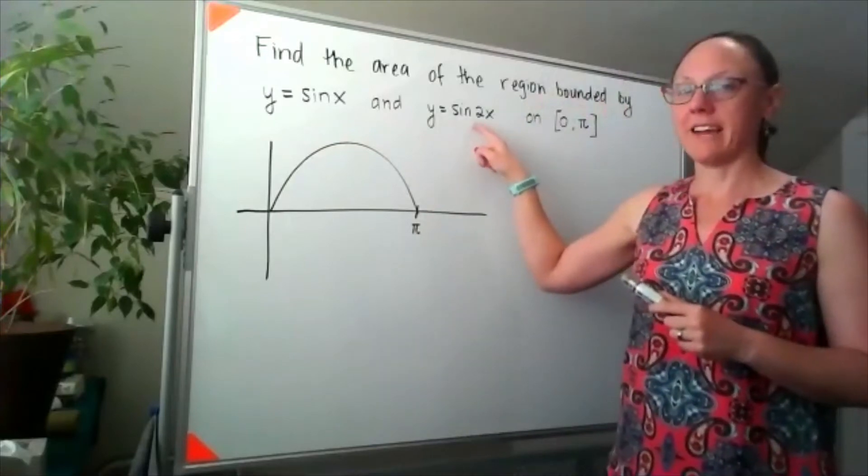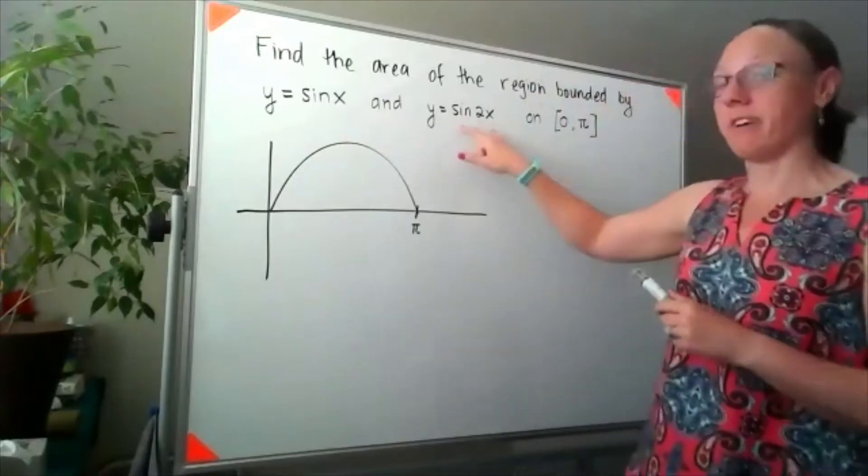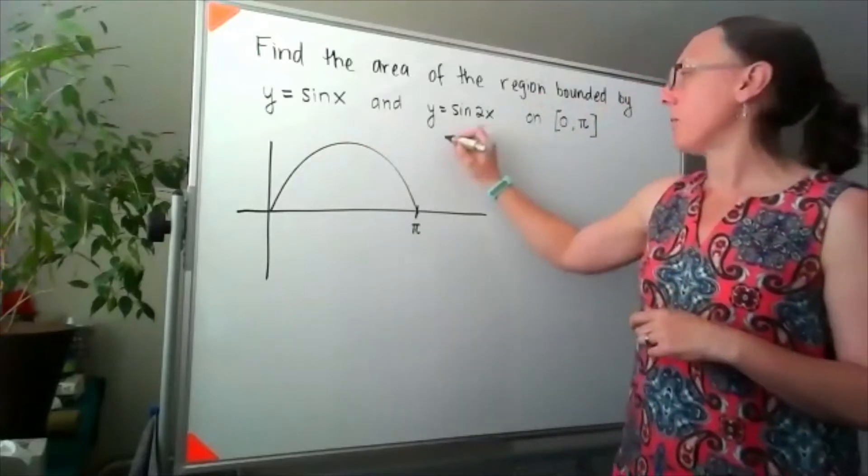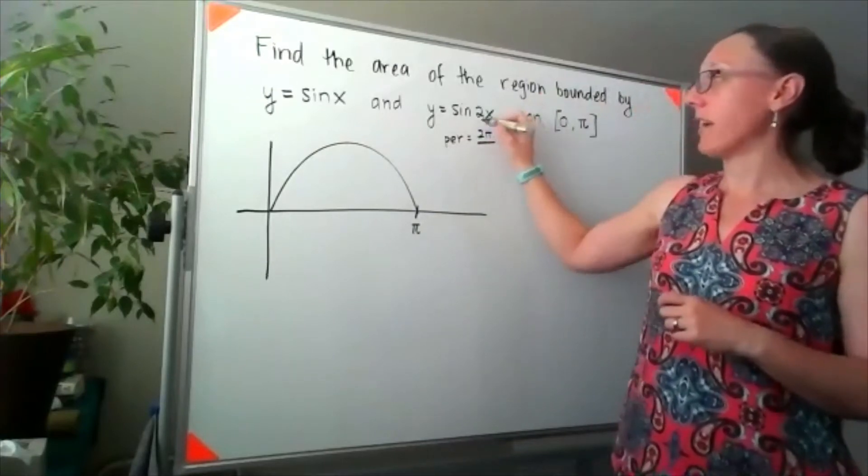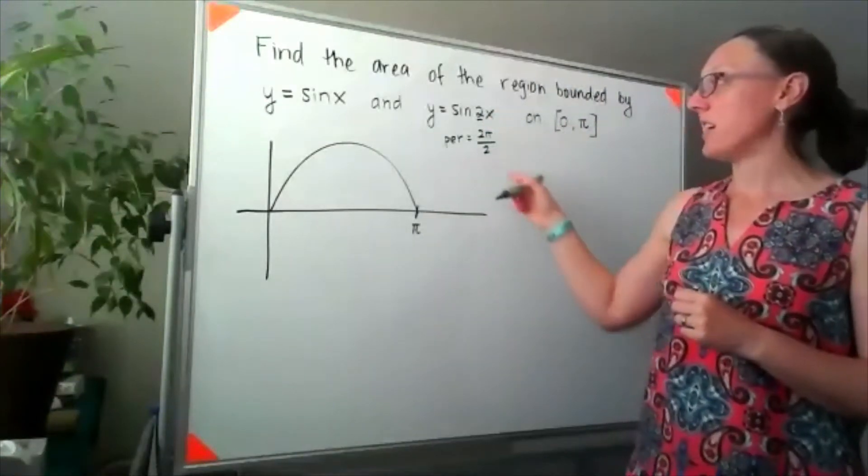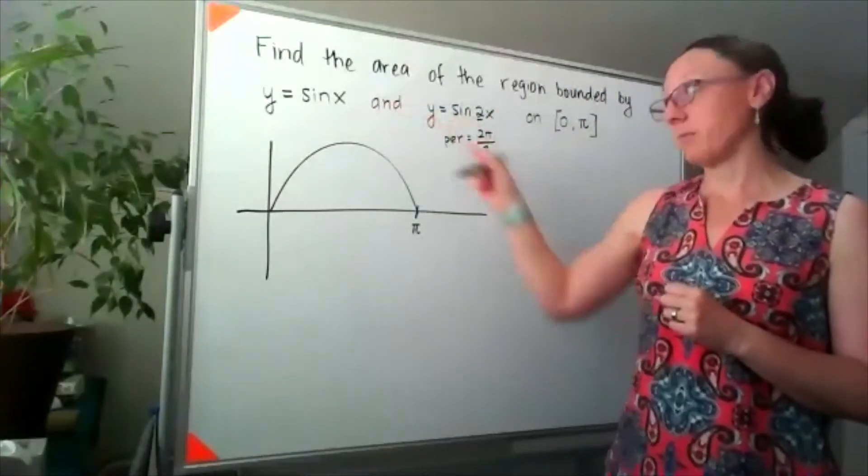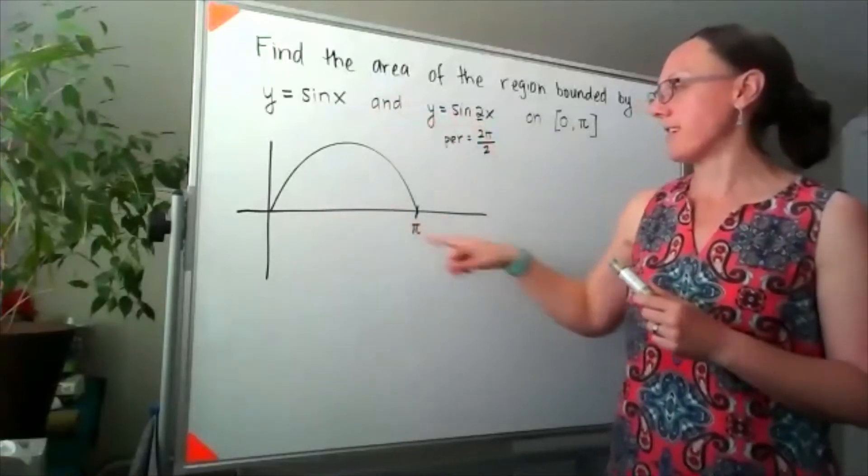Sine of 2x - that 2 changes the period for sine. The way that I would find the period of this graph: that period would look like 2 pi divided by the coefficient in front of x, or 2 pi divided by 2. So that means that sine of 2x completes a full cycle between 0 and pi.